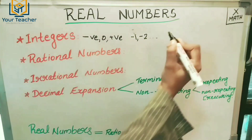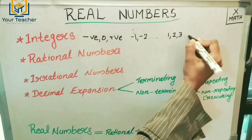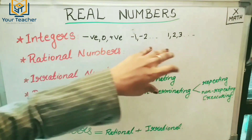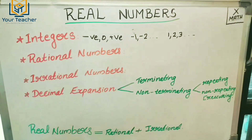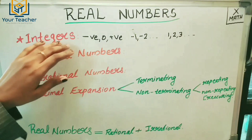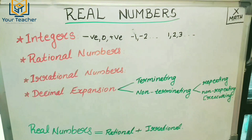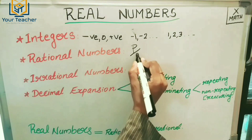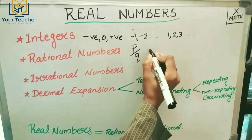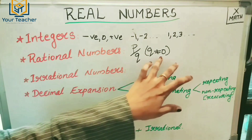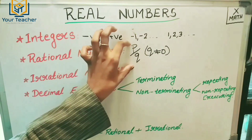In the form of integers, we are going to write them in the form of P by Q, where Q is not equal to zero. If Q equals zero, that number becomes infinity.